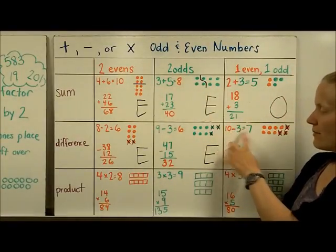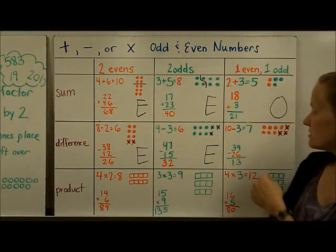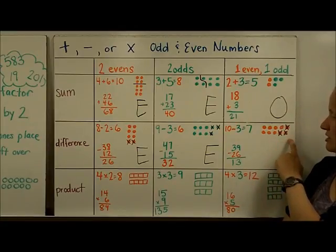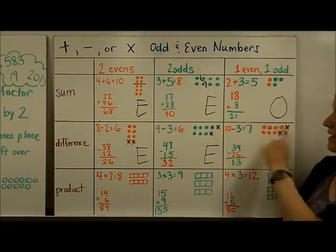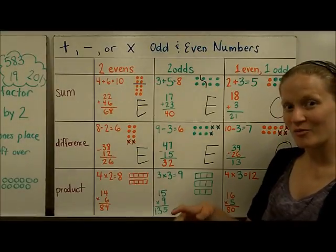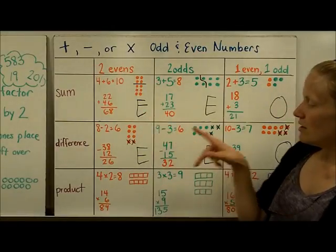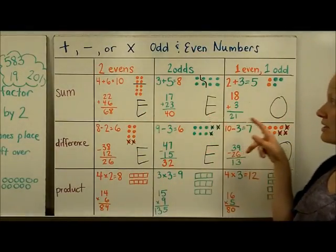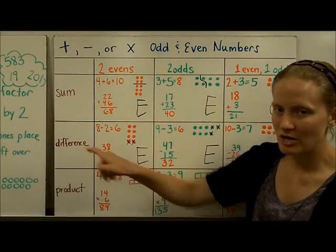Now let's do one even minus one odd number — or an odd minus an even, the order doesn't matter. Starting with 10, which is all pairs, and taking away an odd number leaves an extra circle without a pair, making an odd number as the result. Interestingly, the sum and difference follow the same pattern: two evens make even, two odds make even, but an even and an odd together make odd for both addition and subtraction.